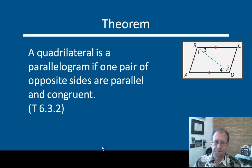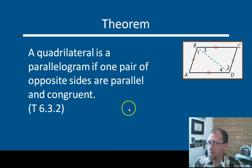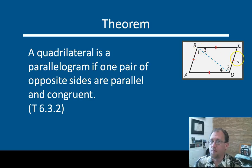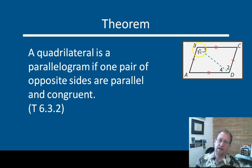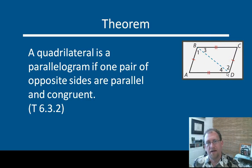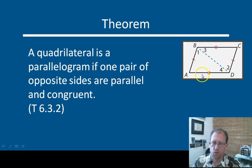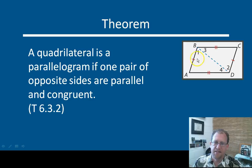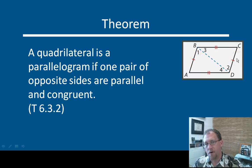The other way is to demonstrate that only one pair of opposite sides are congruent but are also parallel. If you can say that AB and CD are parallel and congruent, then you have a parallelogram. It doesn't matter what you do or don't know about the other sides. If these sides are congruent and parallel, you have a parallelogram.